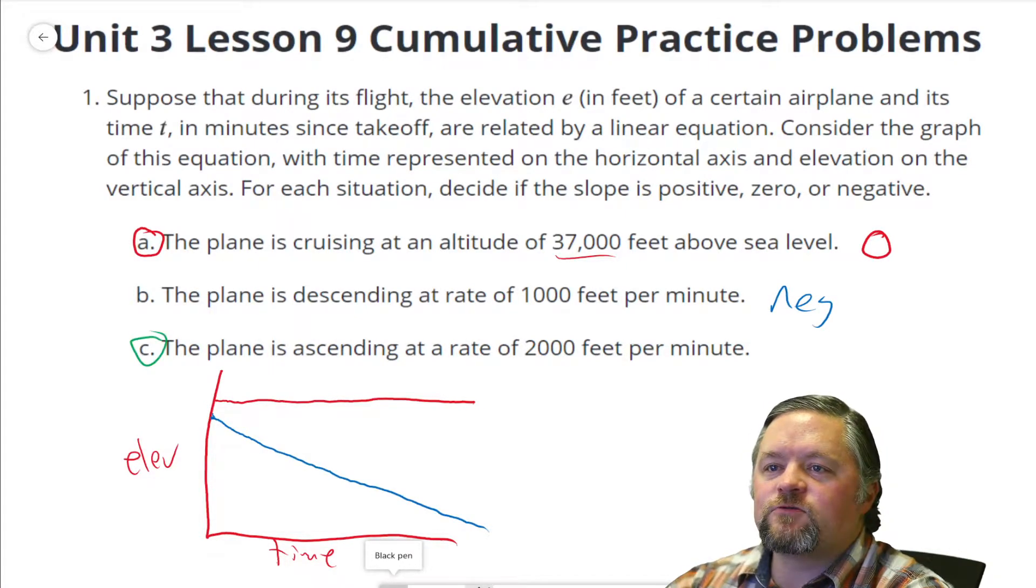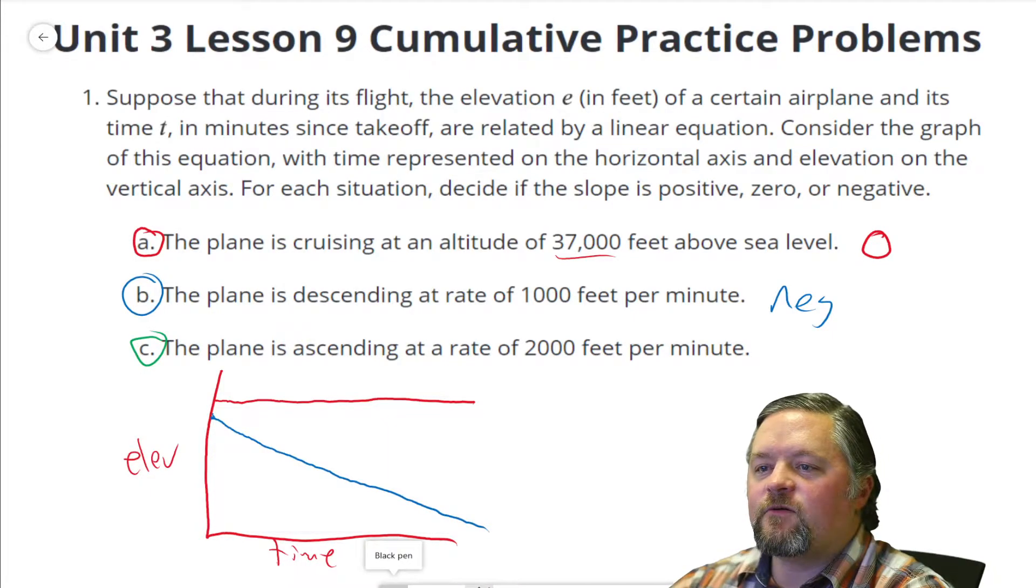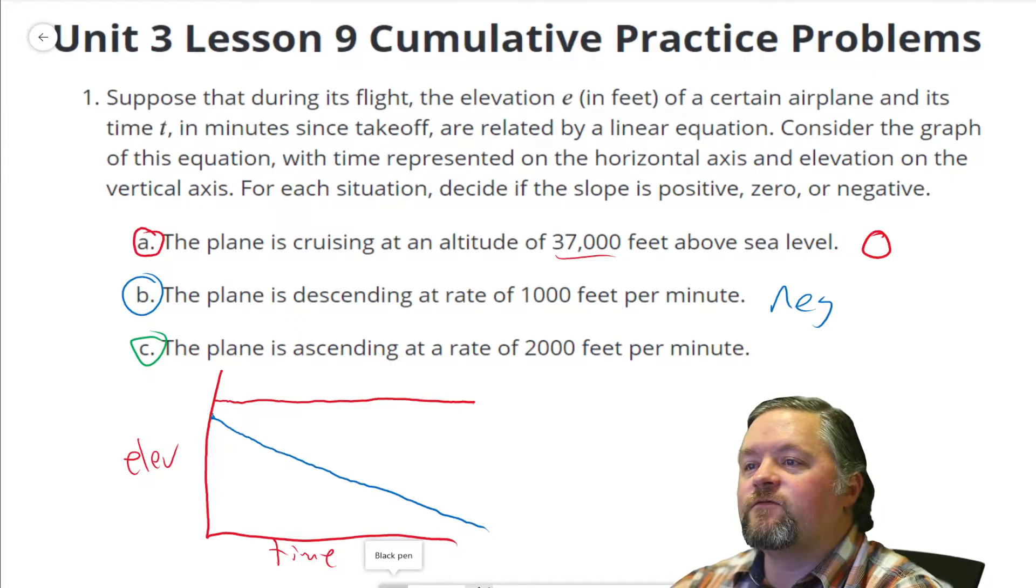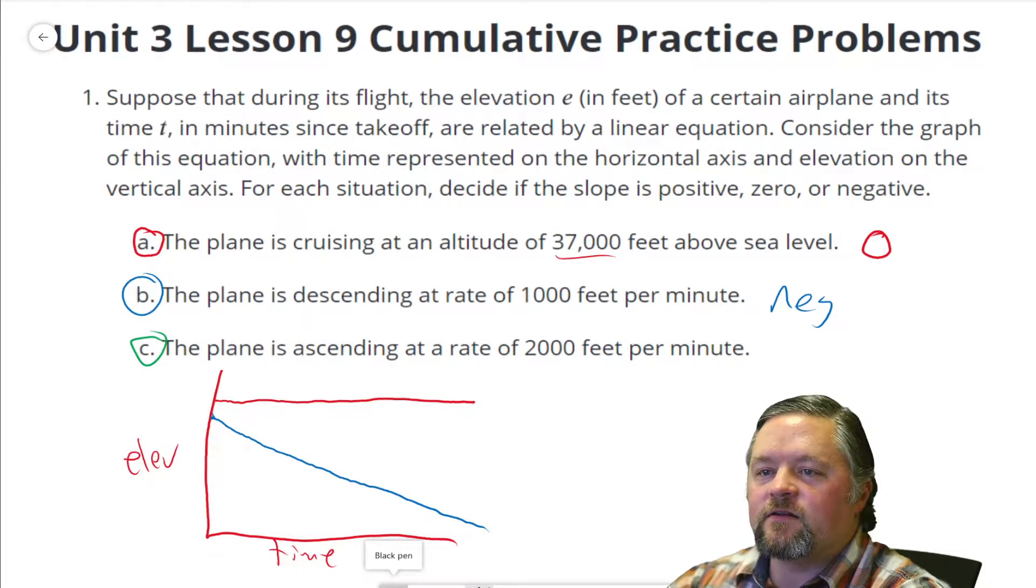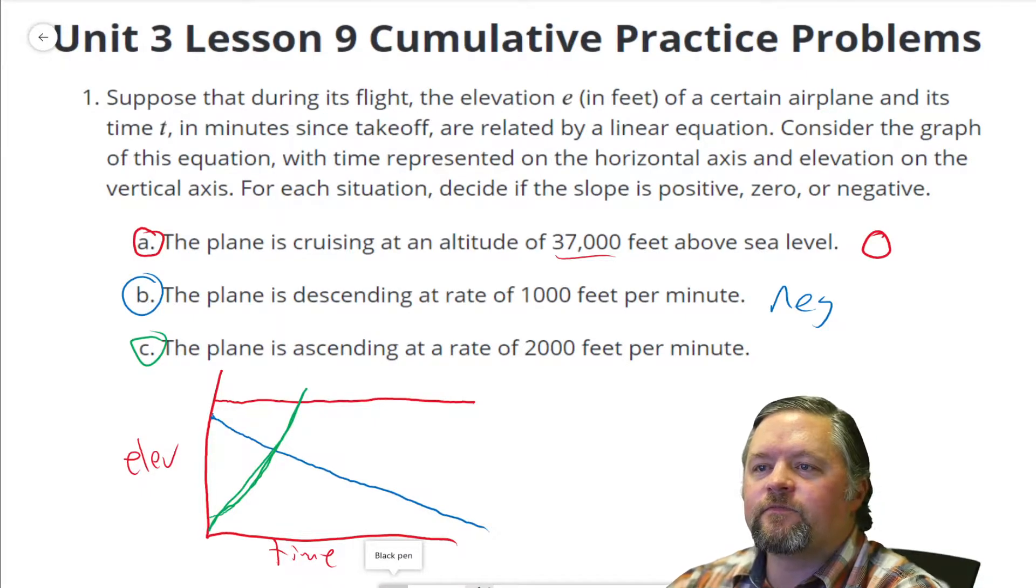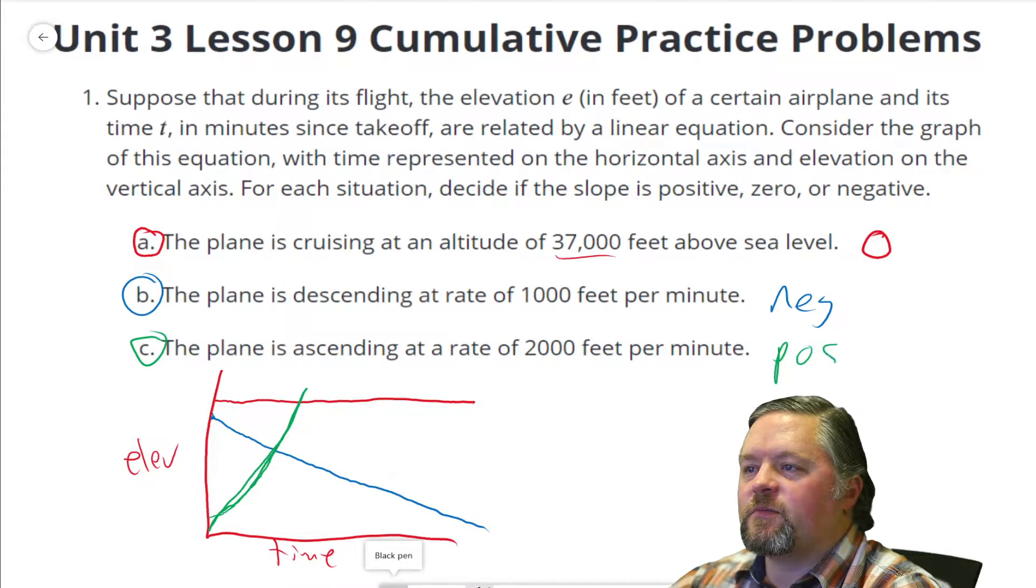Our last one here, the plane is ascending at a rate of 2,000 feet per minute. So ascending, that's the plane on the way up. 2,000 feet a minute, that should be steeper than the other one. So that slope is going to be positive.